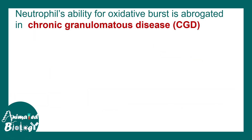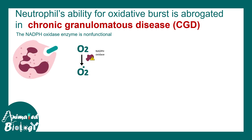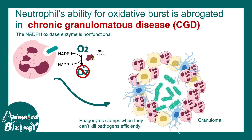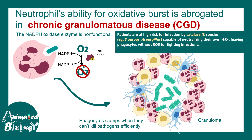A neutrophil's ability to create oxidative burst is compromised in a disease known as chronic granulomatous disease, or CGD. In CGD, the enzyme NADPH oxidase — required to convert oxygen into reactive oxygen species — is compromised, so ROS is not generated. When ROS is absent, phagocytes cannot kill pathogens efficiently, so they clump around the pathogen and create a granuloma. Patients are at high risk of infections with catalase-positive species — like Staphylococcus and Aspergillus — because catalase converts hydrogen peroxide into harmless water.